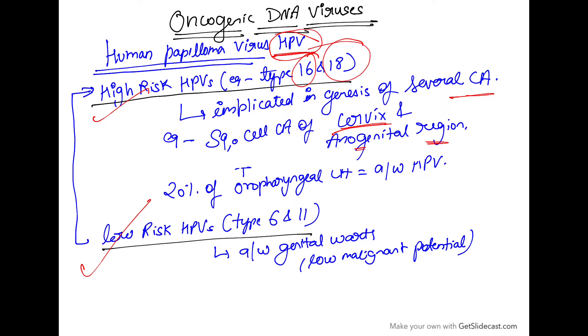Low risk HPV are type number 6 and type number 11. High risk HPV are implicated in cancers. Low risk HPV are implicated in genital warts only, which have low malignant potential.